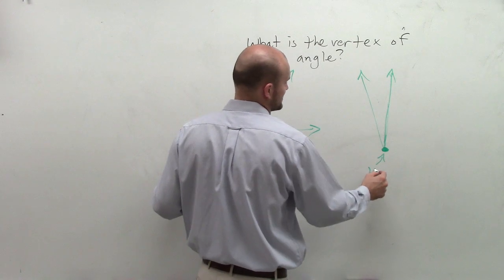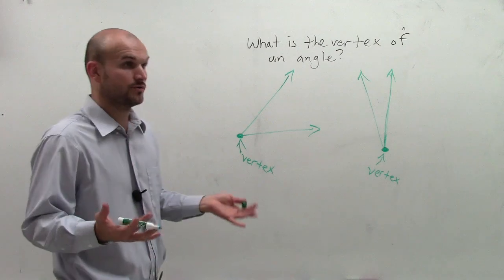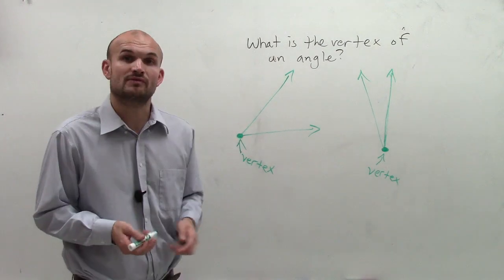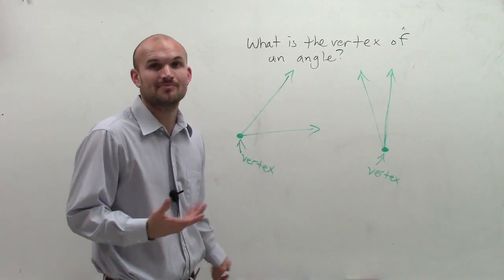So that's all the vertex is in an angle. It's where your two endpoints are, or your one endpoint is, for both of your rays. That's just a quick description of a vertex for an angle. Thanks.